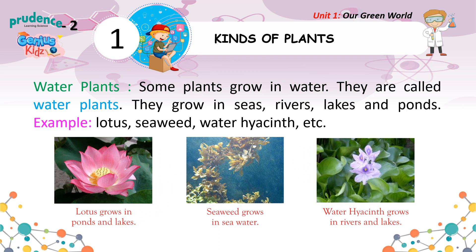Water Plants: Some plants grow in water. They are called water plants. They grow in seas, rivers, lakes and ponds. Examples: Lotus, Seaweed, Water Hyacinth, etc.